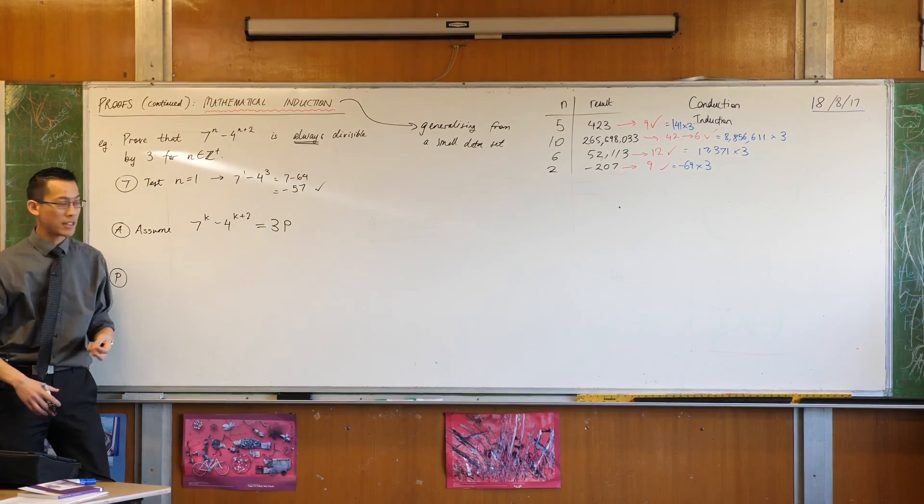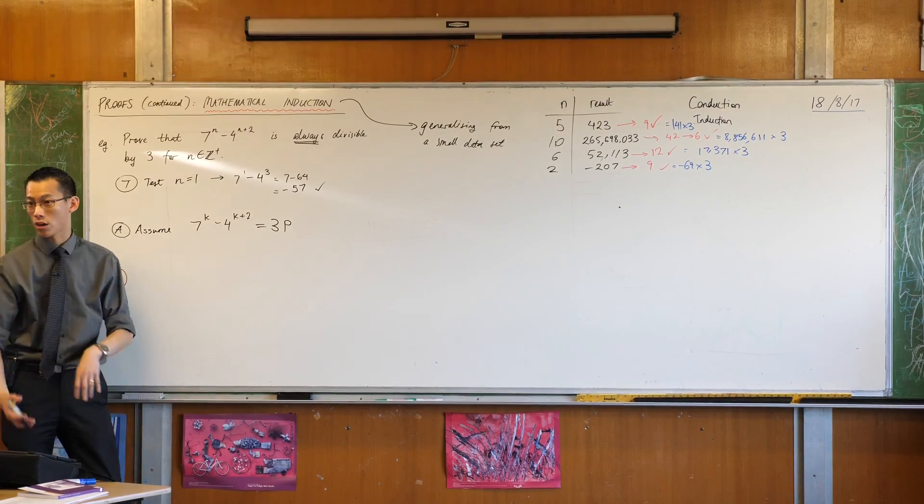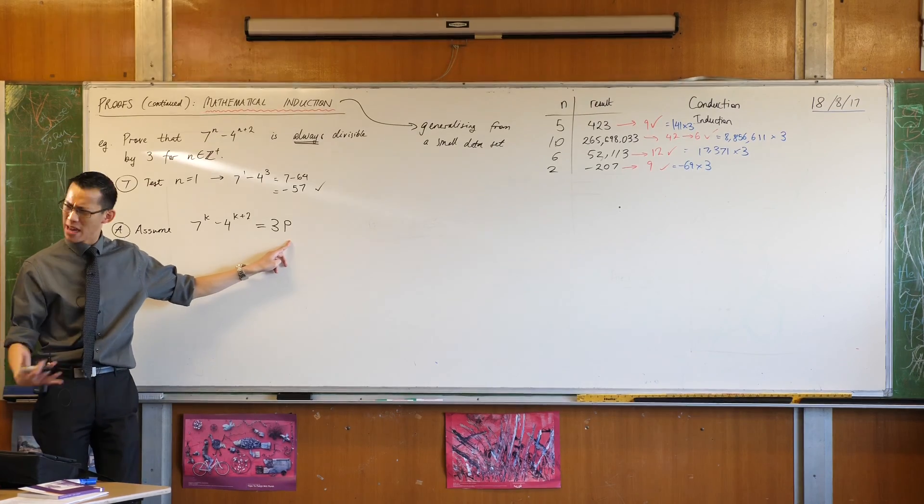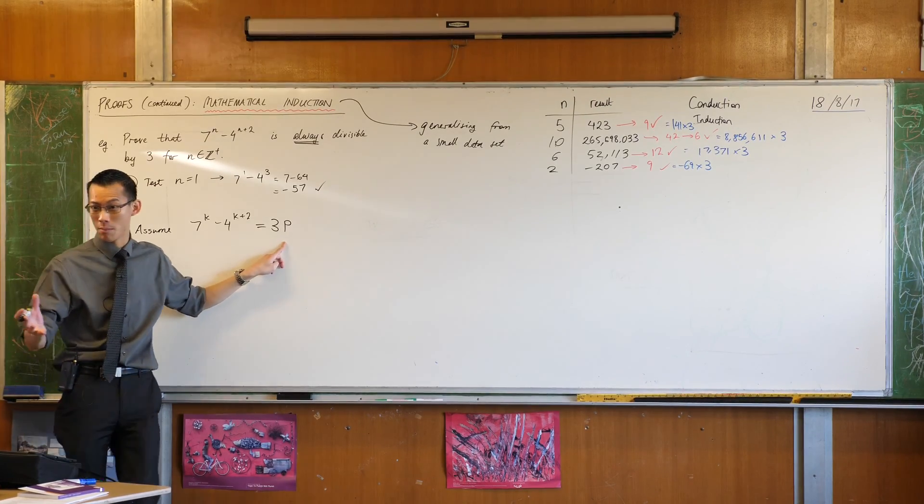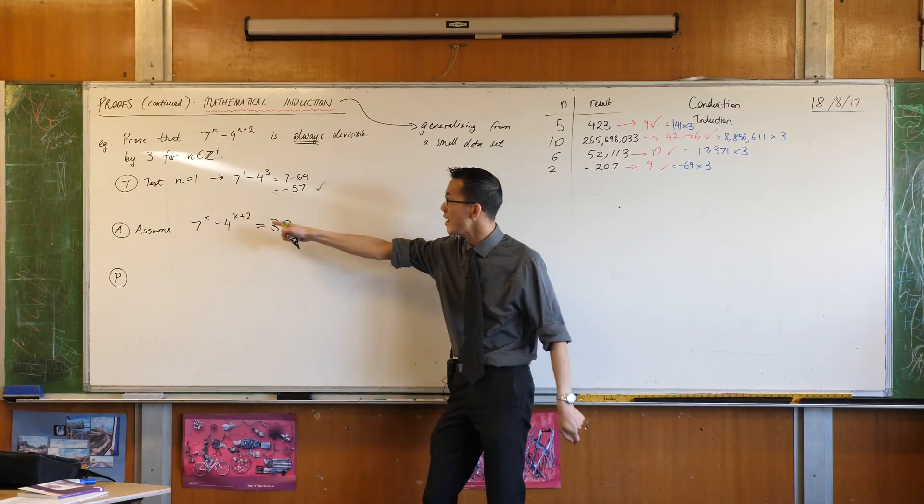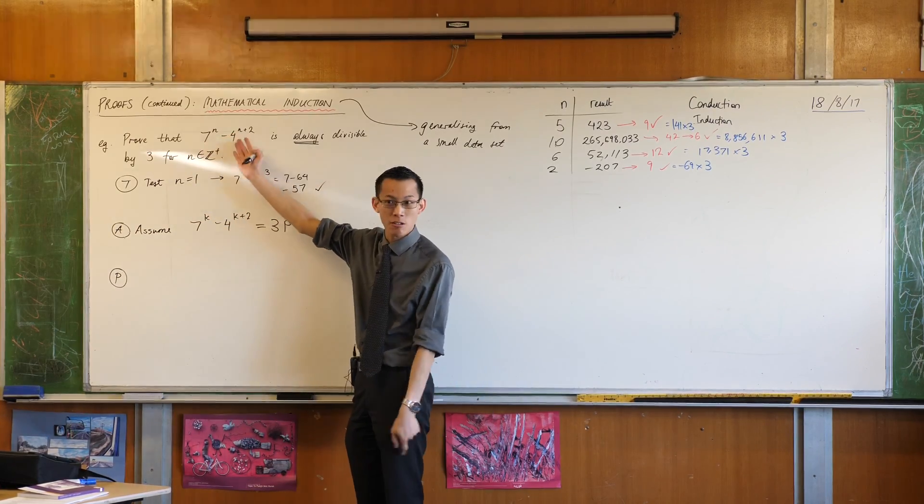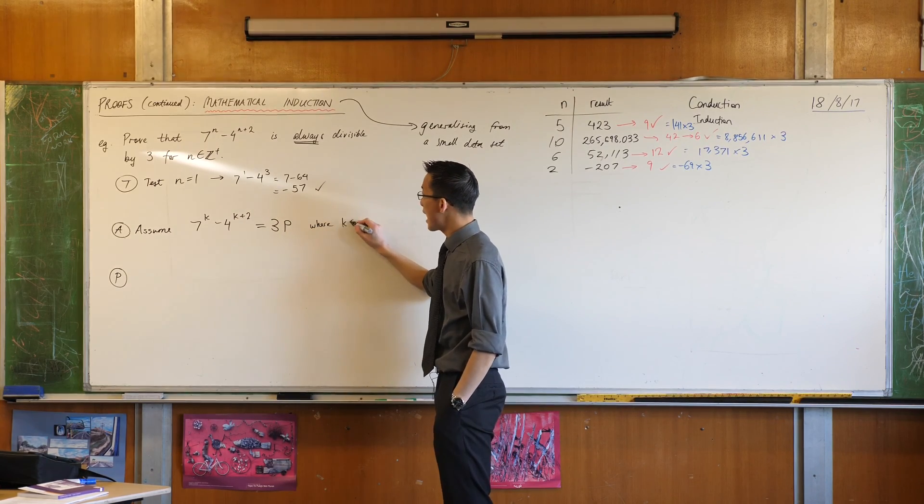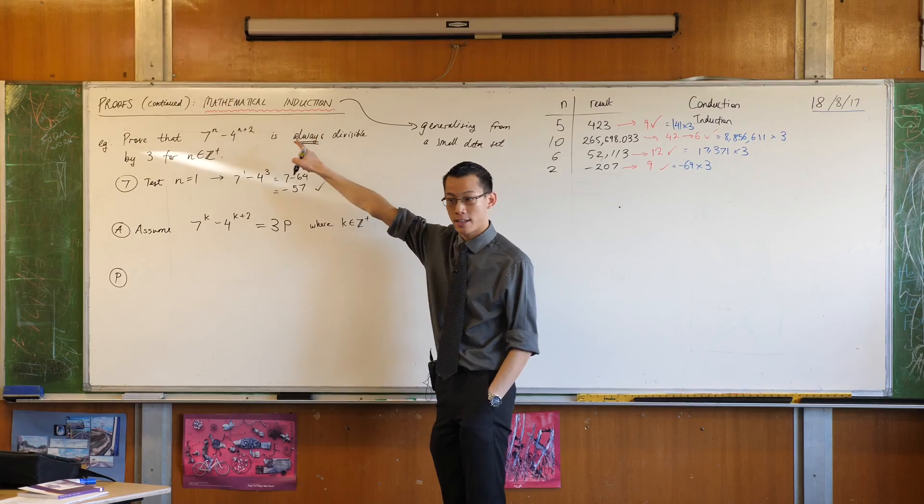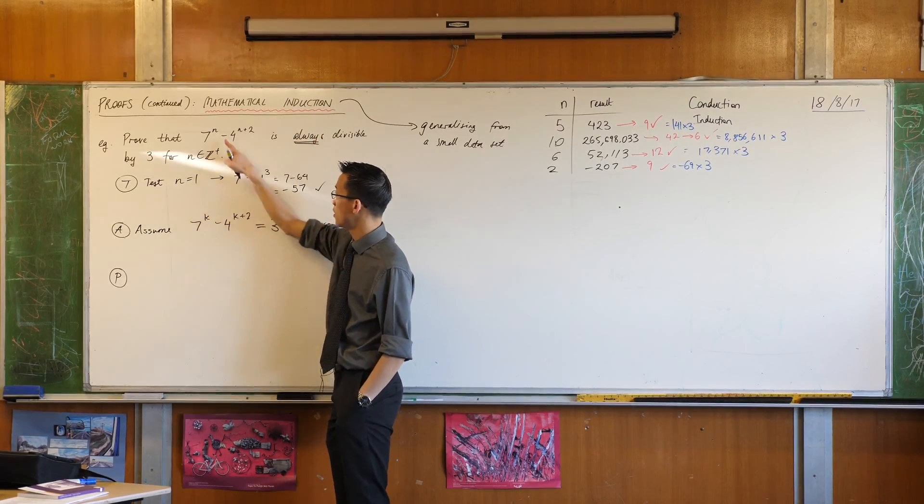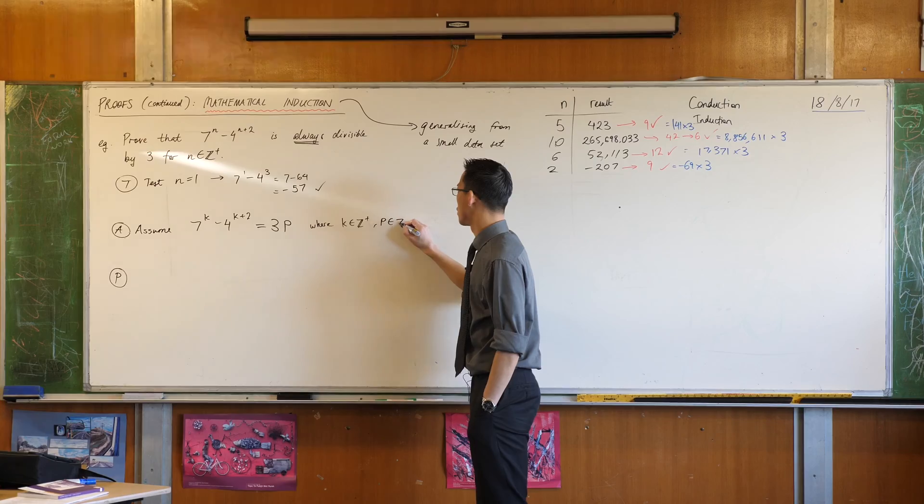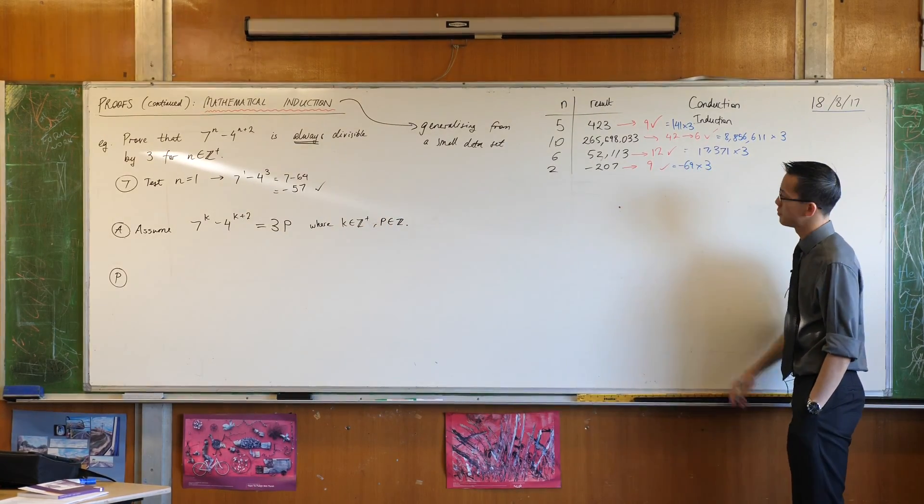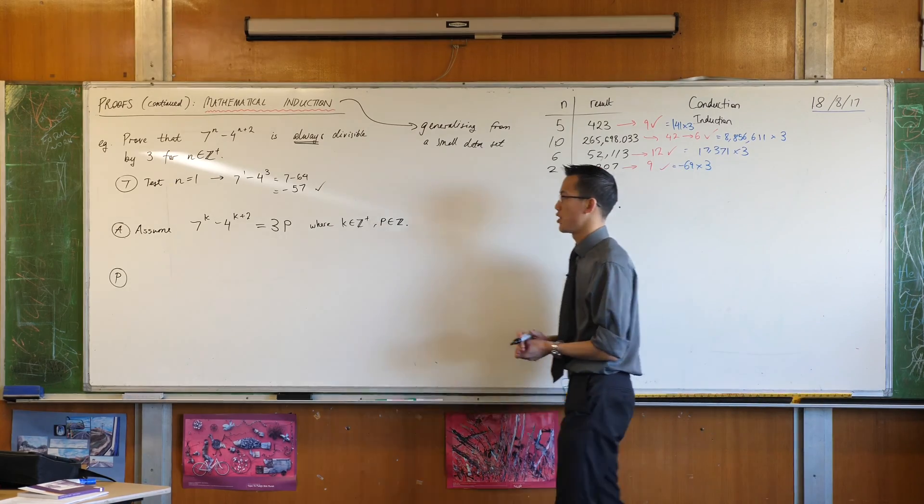Now, I've just introduced a bunch of letters, and so I need to say what kinds of numbers they are, because they're not just any random number. This is not true if p is like 5 and a half. If p is 5 and a half, then this number is not divisible by 3. It has to be a whole number. And it's the same deal with k. k is like n, so it has to follow the same rules. So I'm going to say where k has to be a positive integer, just like n does. You see how it's sitting in the same spot as n is? And p actually is just an integer. I'm okay if that's negative, as you can see, like over here. Okay, so I make this assumption.